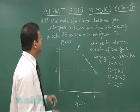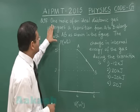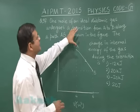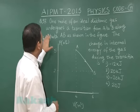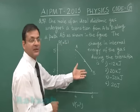Now this question 97 is a question of thermodynamics and here you are supposed to find out the change in internal energy. It says that one mole of an ideal diatomic gas undergoes a transition from A to B along a path AB as shown in the figure.